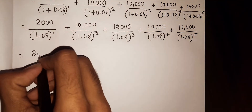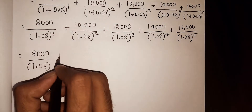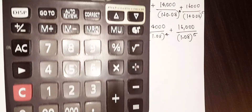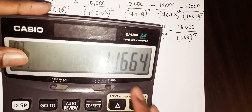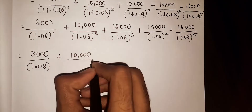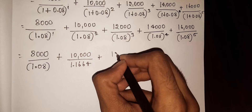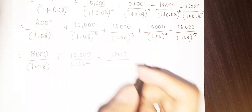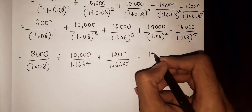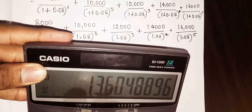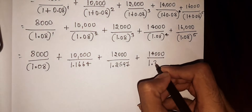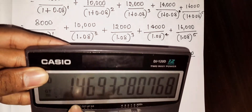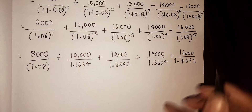Anything to the power of 1 is the same, so 1.08^1 = 1.08. Take your calculator. Press 1.08, then multiply once and press equal to get 1.1664 for the power of 2. For power of 3, press equal again to get 1.2597. For power of 4, press equal again to get 1.3604. For power of 5, press equal again to get 1.4693.